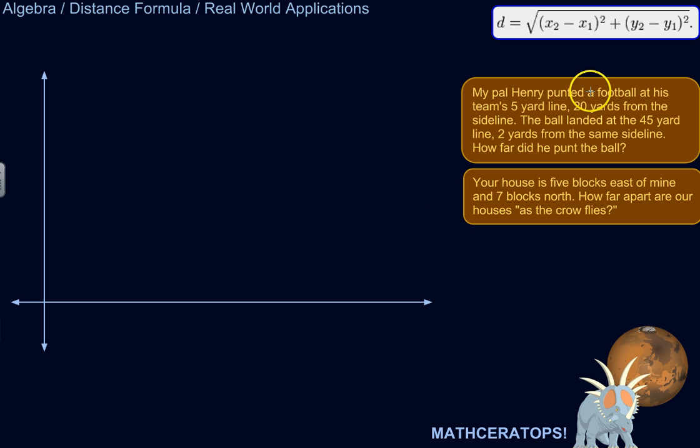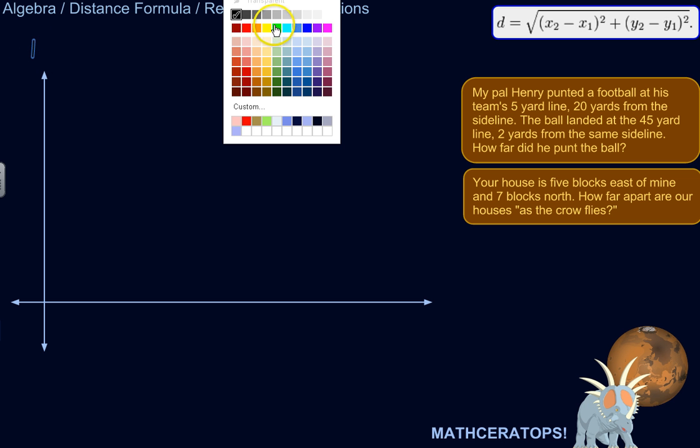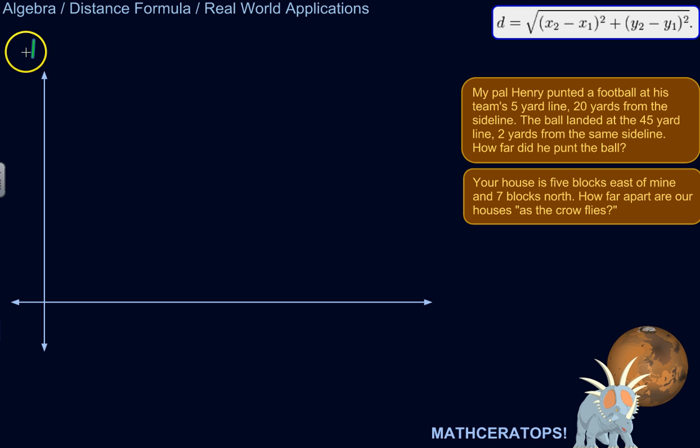So let's diagram this. Let's figure out where he punted the football. Let's call this the sideline. Let's call the Y-axis, let's call that the sideline, because if you're looking down at the field, this kind of looks like it. And let's call this the goal line.